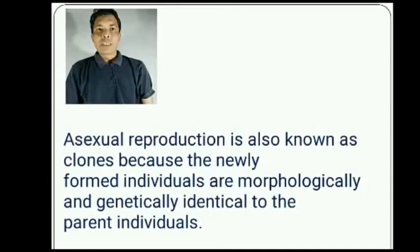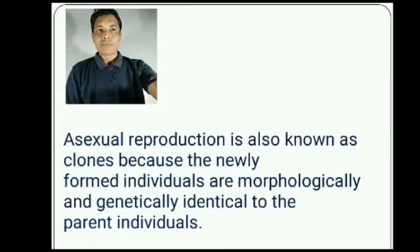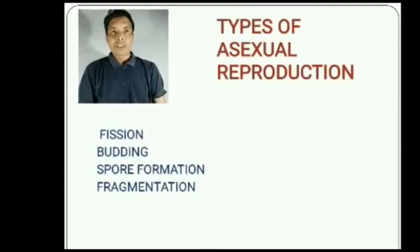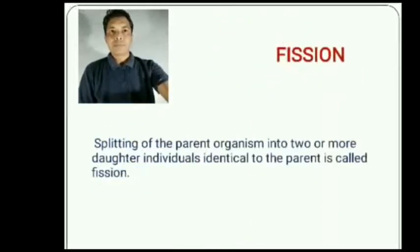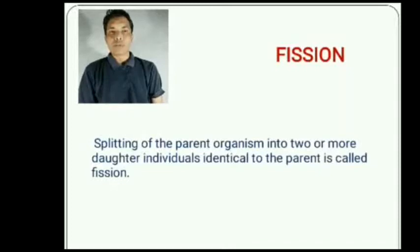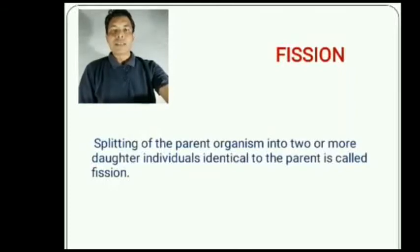Asexual reproduction is also known as cloning because the newly formed individuals are morphologically and genetically identical to the parent. The types of asexual reproduction are fission, budding, spore formation, and fragmentation. What is fission? Splitting of the parent organism into two or more daughter individuals identical to the parent is called fission. Fission itself is a cell division.